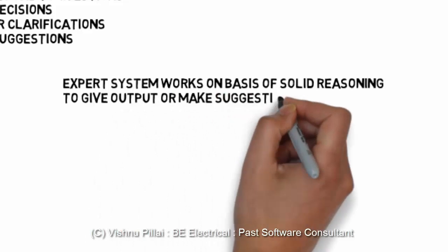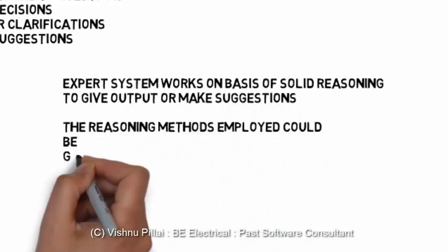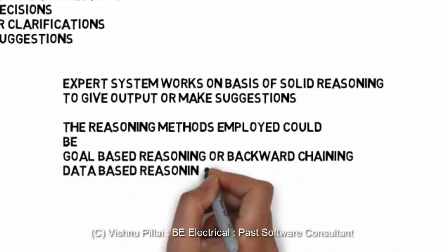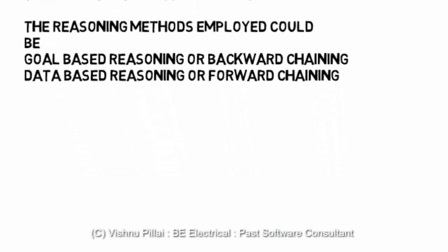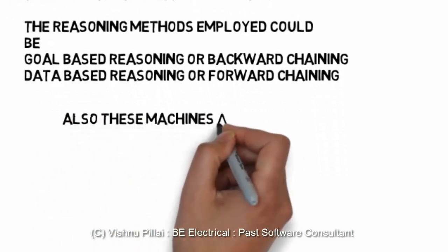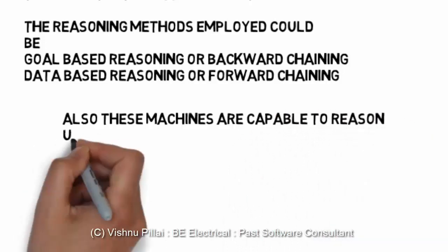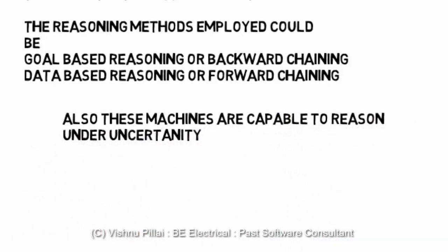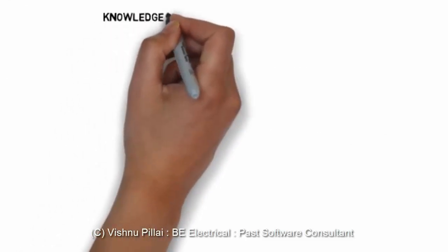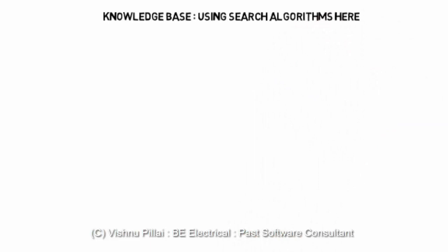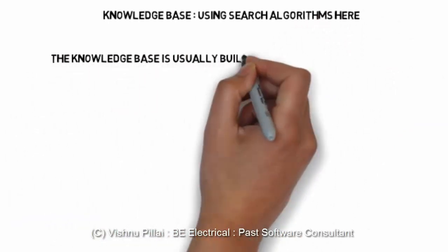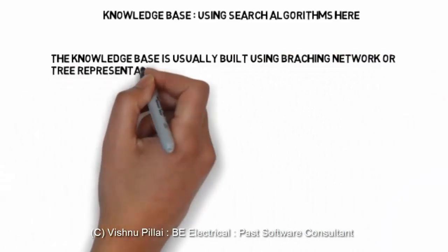The expert system works on solid reasoning to give output or make suggestions. The reasoning methods employed could be goal-based reasoning, backward chaining, database reasoning, or forward reasoning. Reasoning is the ability to arrive at a solution based on the problem given. For example, in a medical diagnosis system, five symptoms input by the user are processed by the algorithm to diagnose a disease or make a suggestion. The reasoning machine is the core of any expert system.